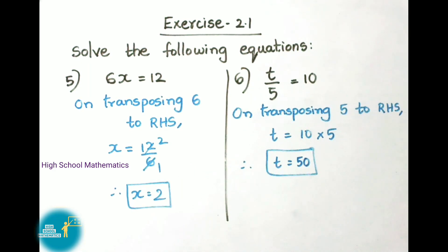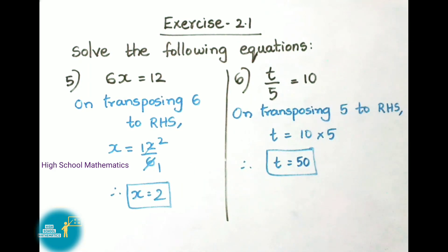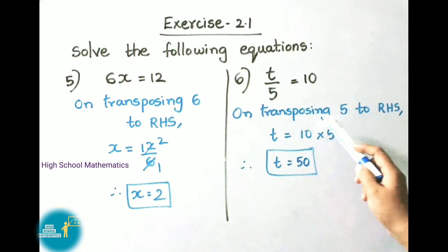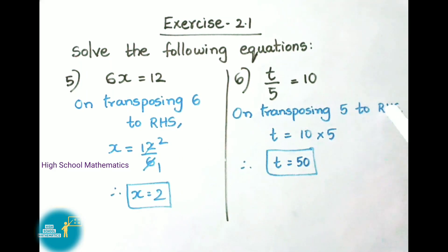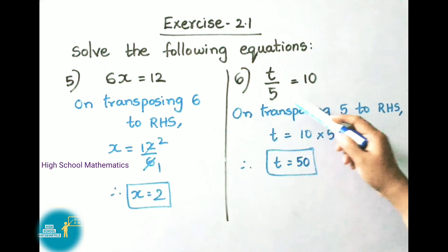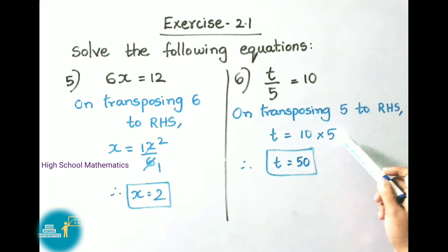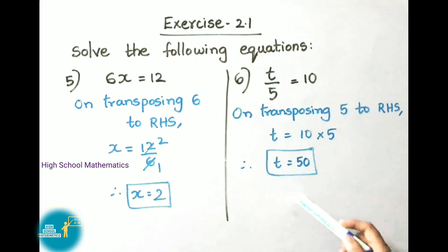See now question 6: T by 5 equals to 10. We have to remove this 5, so we transpose 5 to RHS. Here 5 is dividing, so on transposing it becomes multiplied. So T equals to 10 into 5, therefore T equals to 50.